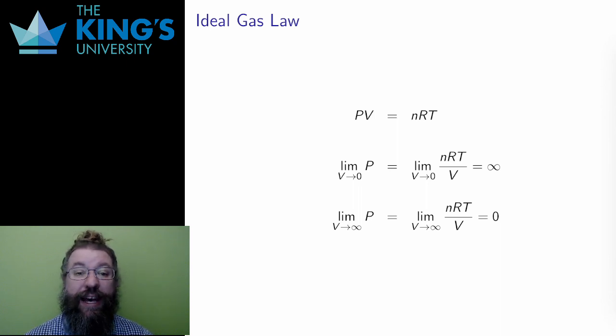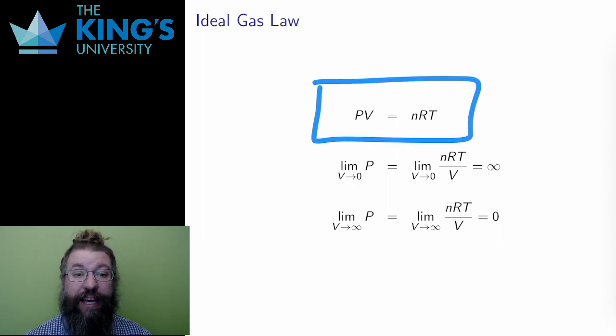This is the ideal gas law, a formula that governs the pressure and volume of a gas. P is pressure, V is volume of the region that contains the gas, n is the number of molecules of the gas involved, R is a special constant that governs the relationship, and T is temperature.